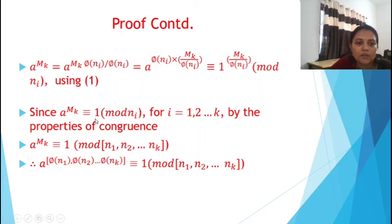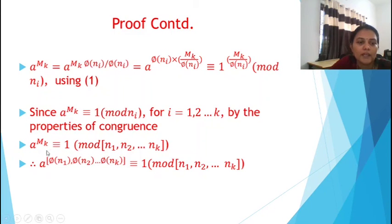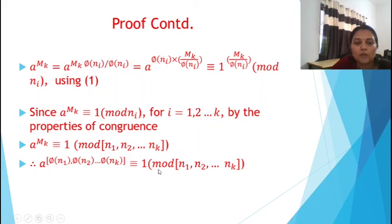Since a raised to mₖ is congruent to 1 mod nᵢ for each i from 1 to k, by the properties of congruence we can conclude: a raised to mₖ is congruent to 1 mod lcm(n₁, n₂, ..., nₖ). Therefore, a raised to lcm(φ(n₁), φ(n₂), ..., φ(nₖ)) is congruent to 1 mod n₁·n₂·...·nₖ.